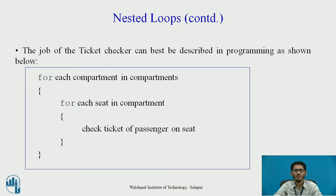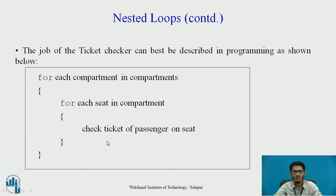Here we have a small code describing the job of the Ticket Checker. We can see two loops — one inside the other. This is the outer loop and this is the inner loop. For each compartment in the set of compartments, we check for each seat in that compartment, and the Ticket Checker checks the ticket of the passenger on that seat. This process goes on for one compartment, then the next compartment is taken up, and in this way the entire task of checking every passenger on every seat of every compartment is handled.